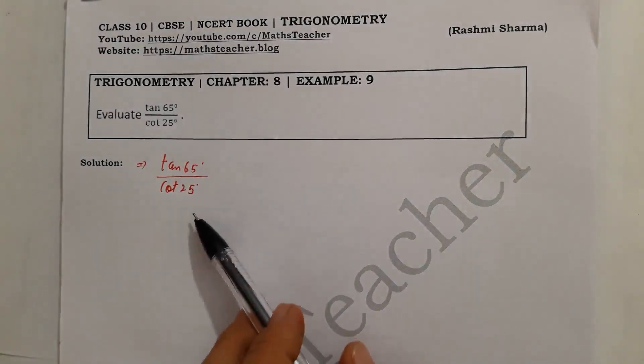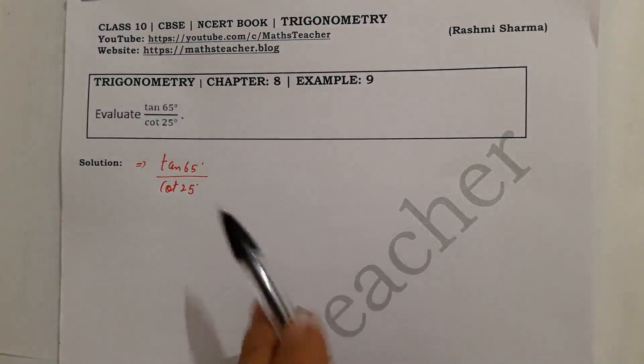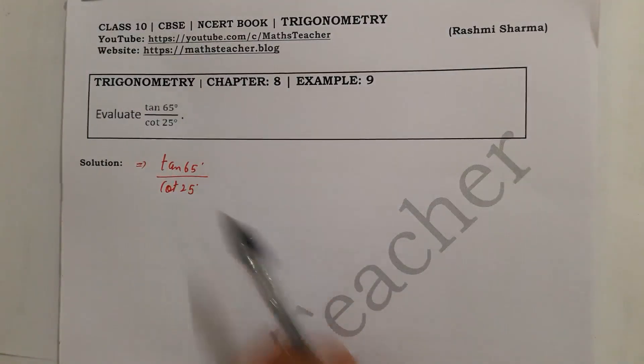You have to do pairing. You have to change one, not both. Either you change the numerator or denominator, but you don't have to change both. So here we change the numerator.